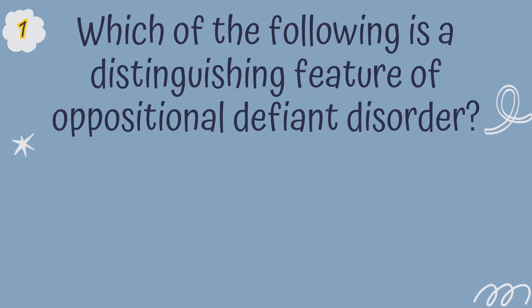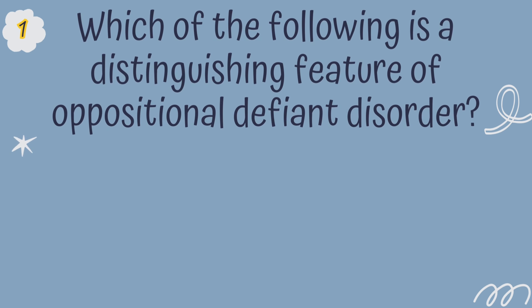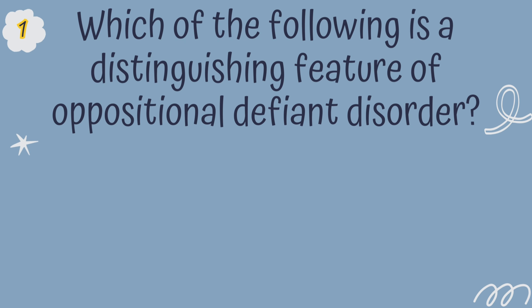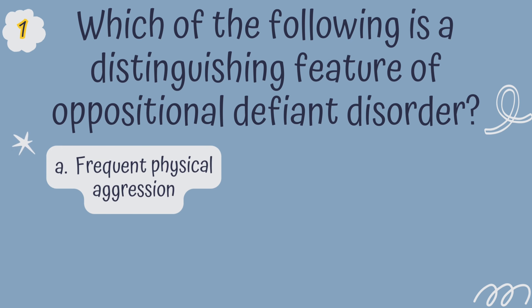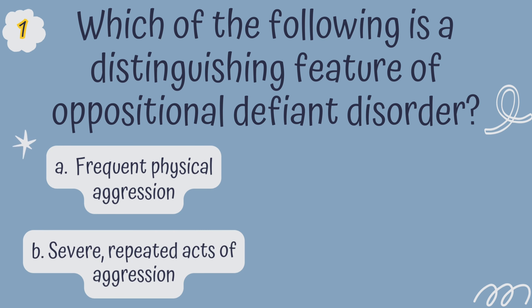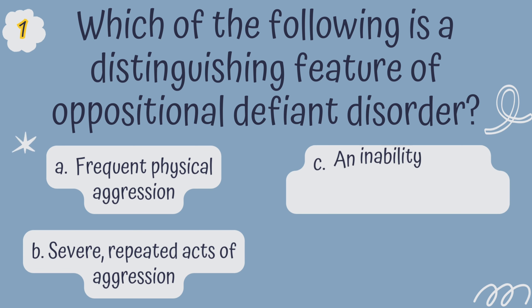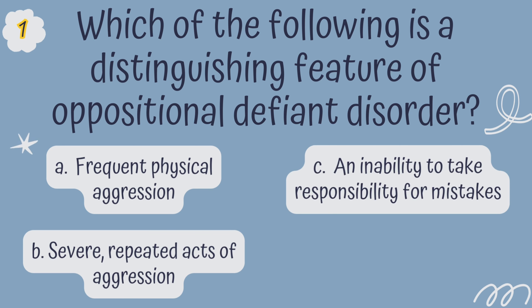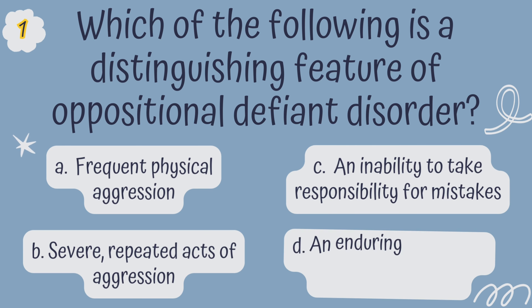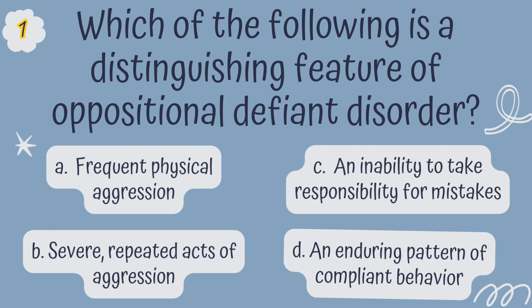Question 1. Which of the following is a distinguishing feature of Oppositional Defiant Disorder? Is it A. Frequent Physical Aggression, B. Severe Repeated Acts of Aggression, C. An Inability to Take Responsibility for Mistakes, or D. An Enduring Pattern of Compliant Behavior?